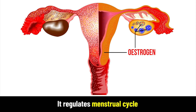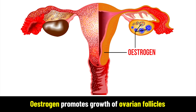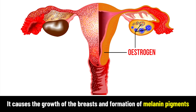Estrogen promotes the growth of ovarian follicles. It causes the growth of the breasts and the formation of melanin pigments.